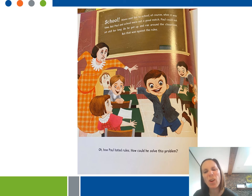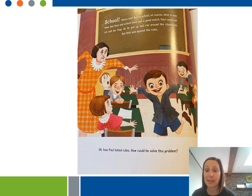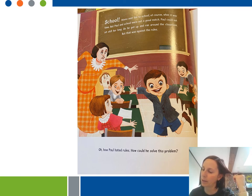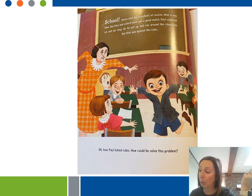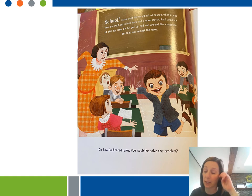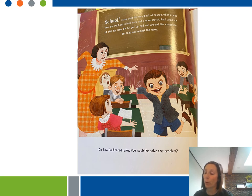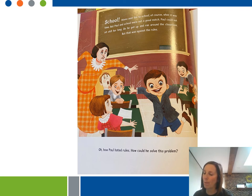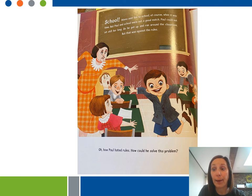Can you make a text-to-text connection to help you understand Paul's problem? In the text, it says Paul hates school and that he always got out of his seat. I remember when we read about Leonardo — he was also bored in school. He was looking out the window, counting birds and thinking about numbers because school was too easy for him. This made Leonardo bored, and he got in trouble for daydreaming. This connection helps me understand Paul's problem: I think Paul is bored with school because it's probably too easy for him, like it was for Leonardo. Paul wants to do more math, but instead he is forced to sit still.